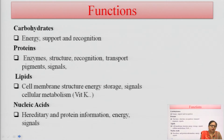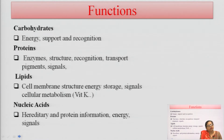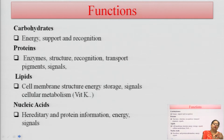Carbohydrate gives energy to our body, supports our biological system, and serves a recognition purpose; it helps in the development of our brain and recognition. Protein's basic unit is amino acid, and proteins have a main function as enzymes. They give the structure to the living system, help in recognition of the human body, help in transport and pigments, and also provide signals to our nerves.